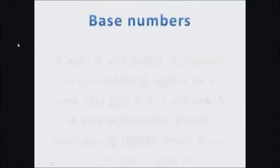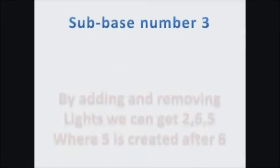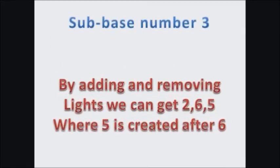This is how it works: first there are base numbers — 1 and 8 are the base numbers. By adding some lights to 1 we can get 3, 4, and 7, where 3 is a sub-base. By removing lights from 8 we can get 0 and 9.